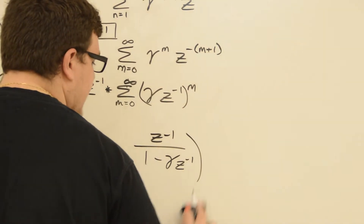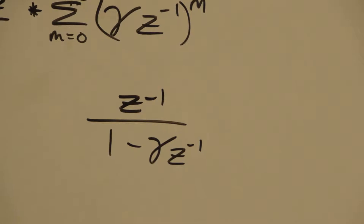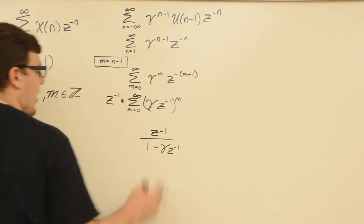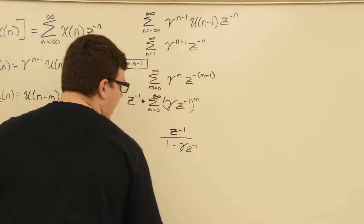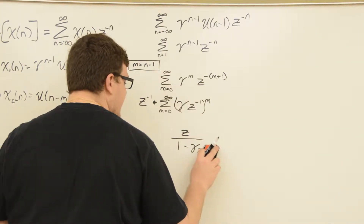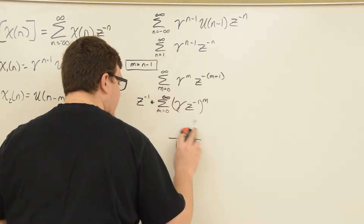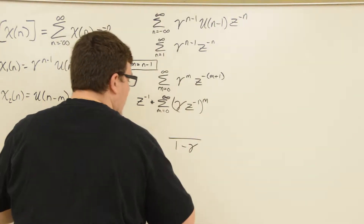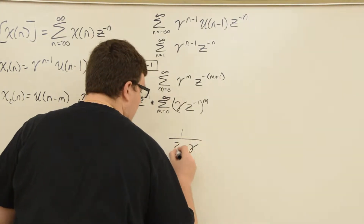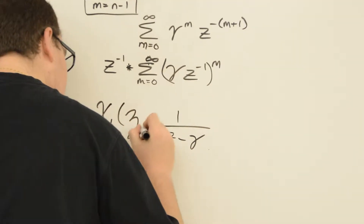This is the Z-transform in the Z inverse form, but if you want it as a function of Z and not Z inverse, we can multiply the top and bottom by Z inverse. In doing that, we increase each power by 1: gamma stays gamma, the 1 becomes Z, and the Z inverse out front becomes 1. So this will be X1 of Z.